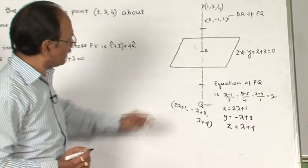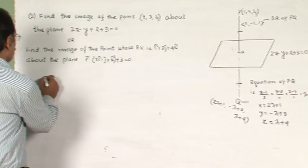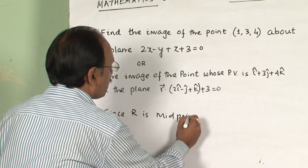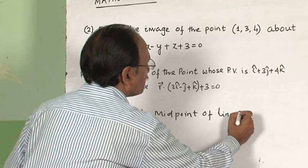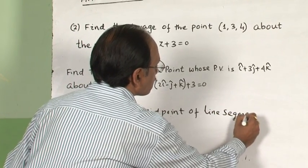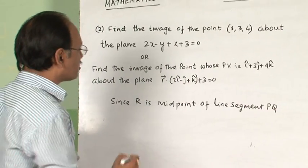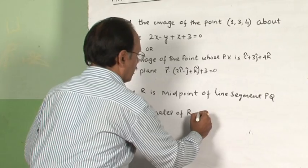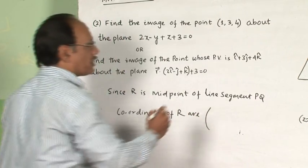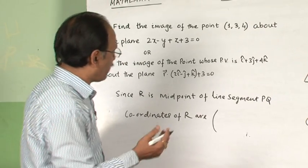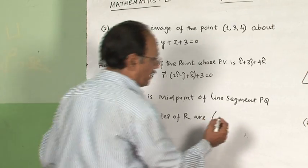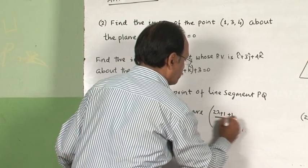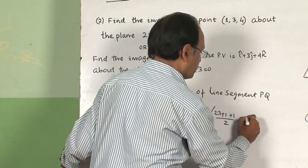Now, how to get the value of lambda? Since R is the midpoint of PQ, we can apply the midpoint formula. The coordinates of R are given by ((2λ + 1 + 1)/2, (-λ + 3 + 3)/2, ...), and since R lies on the plane, substituting will give us the value of lambda.